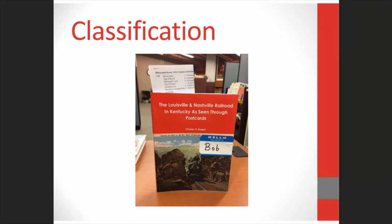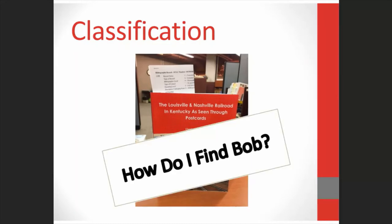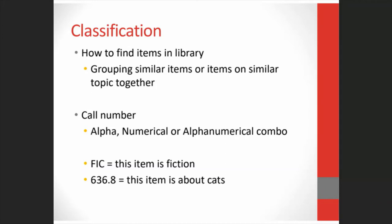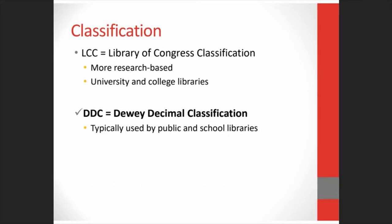Bob's been described and named, so we can find him in our library catalog. But how do our patrons actually find him in the collection? That's when we use a classification system. You have to have a uniform way of telling people where items are in the library, and this is where classification comes in. Classification is basically organizing things and is a way to group similar items together. In the library, we use a call number, which is the address of the item that tells you how to find it. A call number can be letters — like FIC might mean the item is fiction — or numbers, or alphanumeric. The two most popular systems are the Library of Congress classification system and the Dewey Decimal classification system.